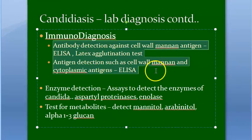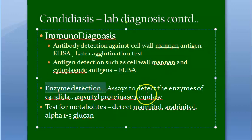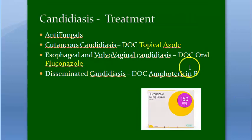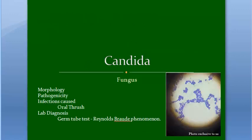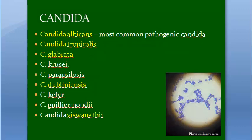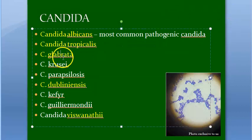Immunodiagnosis: antibody or antigen detection with ELISA, enzyme detection for aspartyl proteinases, and metabolites such as mannitol and arabinitol. Treatment: topical azoles and fluconazole. The important Candida species to remember are albicans, glabrata, and dubliniensis.